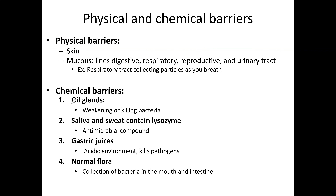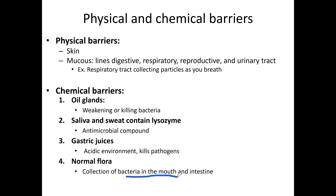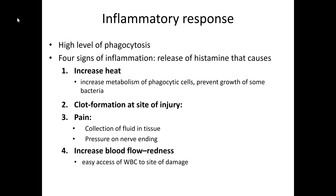In the stomach you have your chemical barrier — the acid destroys bacteria. Chemical barriers include oil glands that weaken or kill bacteria, saliva and sweat containing lysozyme (antimicrobial compounds that destroy bacteria), gastric juices creating an acidic environment that kills pathogens, and normal flora — the collection of bacteria in your mouth and intestine that protects you from foreign bacteria and pathogens.